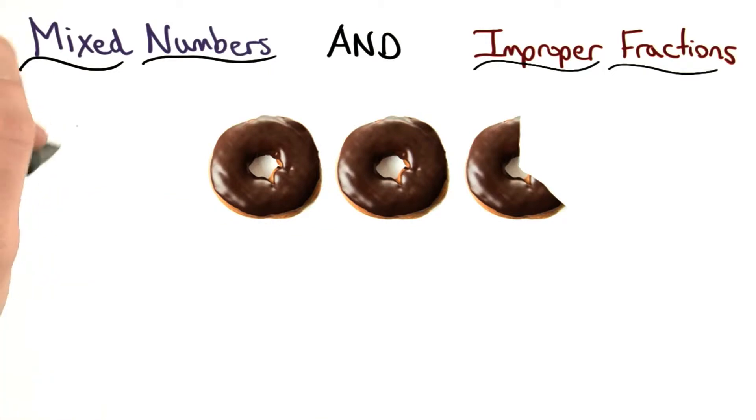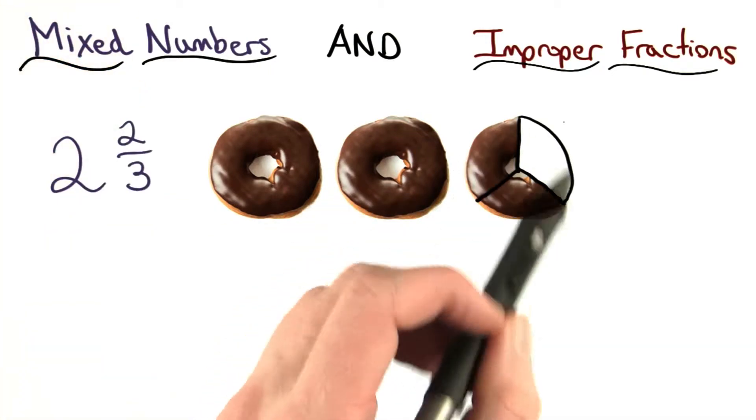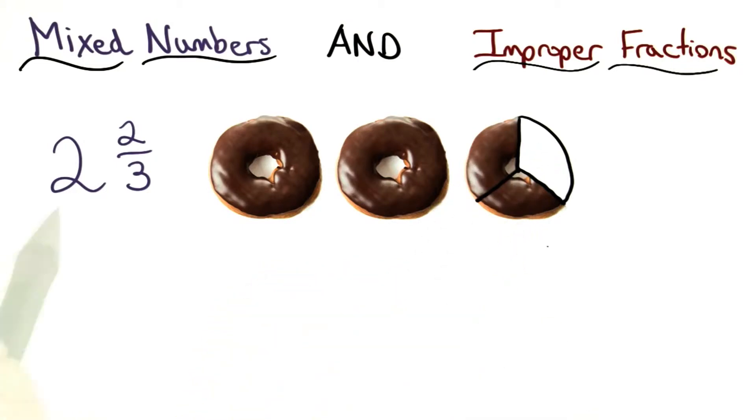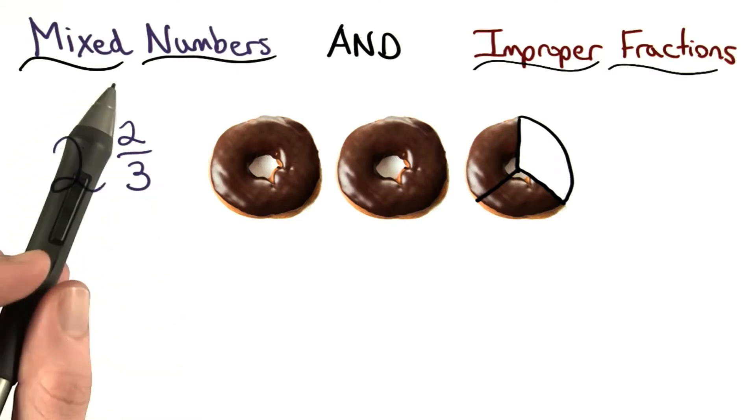So here I have two donuts, and then I have 2 thirds of one. I can think about splitting up a whole donut into three equal pieces or thirds, and I'd have 2 thirds. So our entire mixed number would be 2 and 2 thirds. Notice we have a mixture of whole numbers and fractions. That's why we call these mixed numbers.